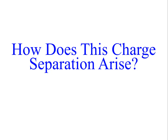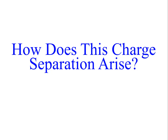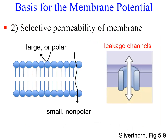How does this charge separation arise? Basically, it comes from two factors. The first is differences in the distribution of ion species in the intracellular and extracellular fluids — sodium and chloride are more concentrated in the extracellular fluid, whereas potassium is more concentrated in the intracellular fluid. These concentration gradients are important in determining the membrane potential. The second factor is the selective permeability of the cell membrane; although ions can't cross the lipid bilayer, leakage channels allow some ion flow, which is important for establishing the membrane potential.